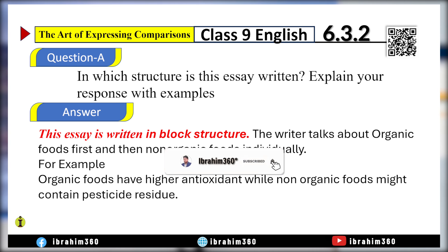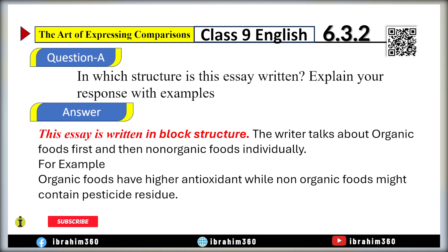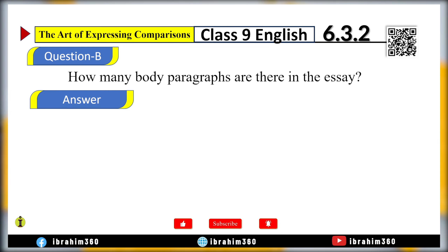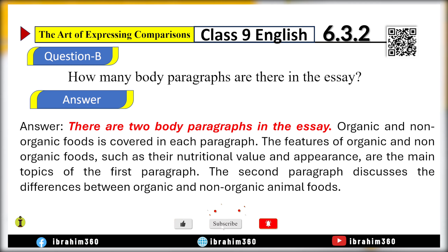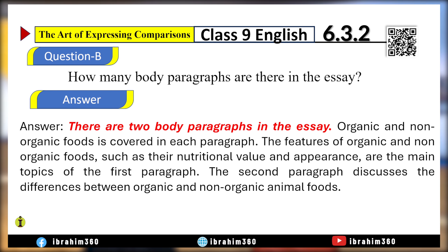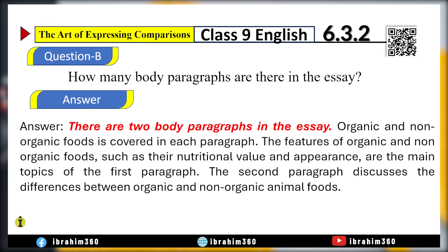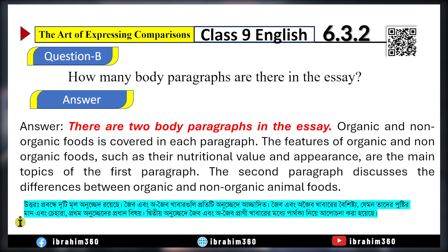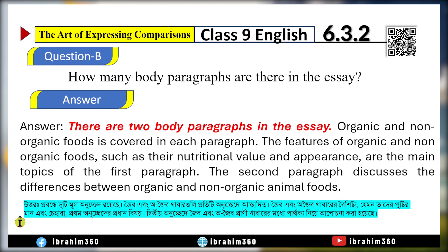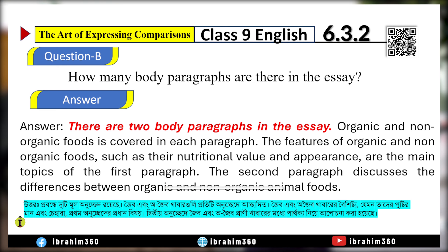Organic food has higher antioxidants while non-organic food might contain pesticides. There are two body paragraphs in this essay. Organic and non-organic food is covered in each paragraph. The features of organic food, such as nutritional values and differences, are the main topics of the first paragraph. The second paragraph discusses the differences between organic and non-organic food.